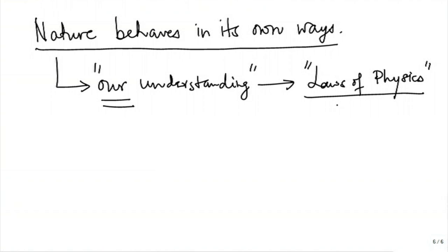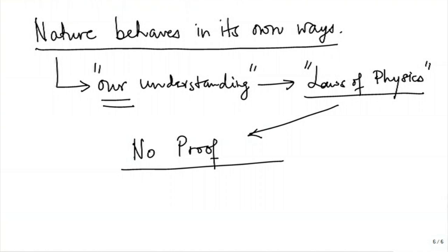For these laws of physics, including thermodynamics, there is no proof. So a question like 'state and prove the nth law of thermodynamics' is meaningless, because these laws are just our understanding of how nature behaves. If there is no proof, why do we believe in those laws? Why do we say that if something violates the first or second law of thermodynamics, something is wrong?